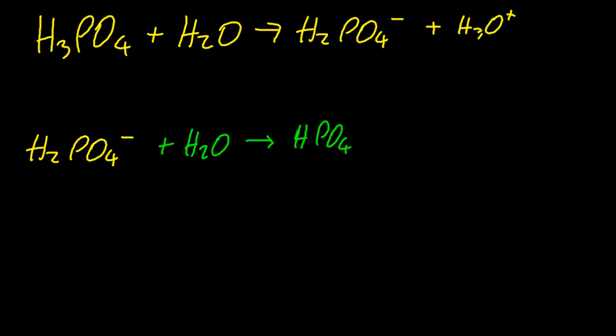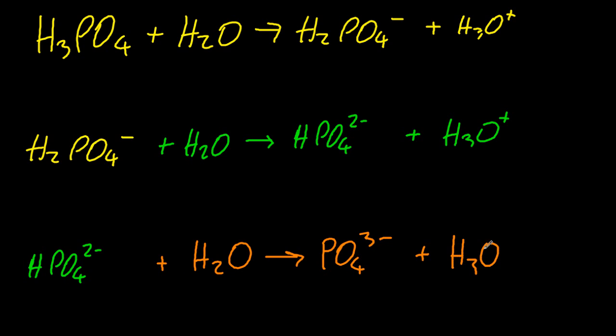My favourite question for this one, how sad to have a favourite question, is which of these chemicals can never be a Bronsted-Lowry acid? And the answer is that one there, PO4³⁻ can't be a Bronsted-Lowry acid. It has no hydrogen.